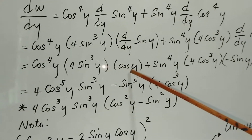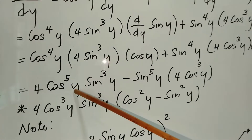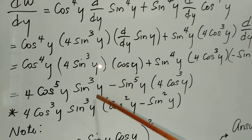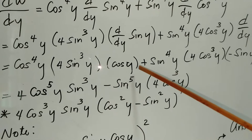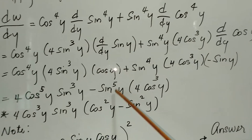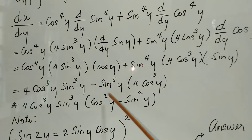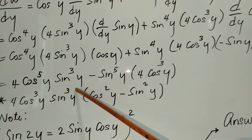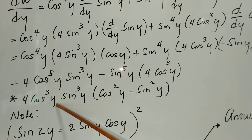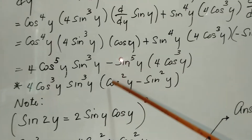So cosine to the fourth y times cosine y gives cosine to the fifth y. We move terms to get: four cosine to the fifth y times sine cubed y, minus four sine to the fifth y times cosine cubed y. We factor out four cosine cubed y sine cubed y, and what remains inside the parentheses is cosine squared y minus sine squared y.